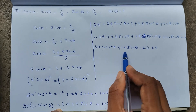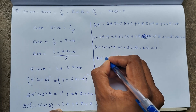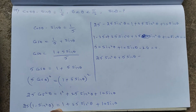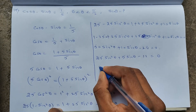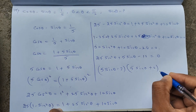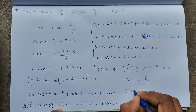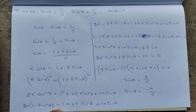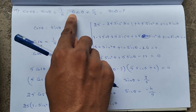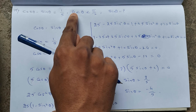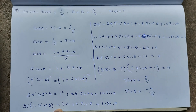Collecting terms: 50sin²θ + 10sinθ − 24 = 0. Dividing by 2: 25sin²θ + 5sinθ − 12 = 0. Factoring: (5sinθ − 3)(5sinθ + 4) = 0, giving sinθ = 3/5 or sinθ = −4/5. Since θ is in (0, π/2), the first quadrant where sine is positive, sinθ = 3/5.